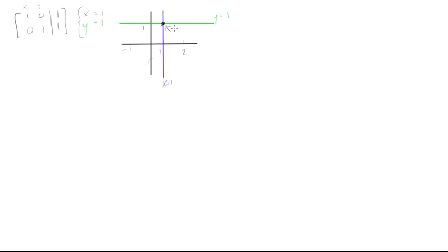This intersection point is (1, 1), which can be written as the vector (1, 1) or coordinates (1, 1). So this system has one unique solution.